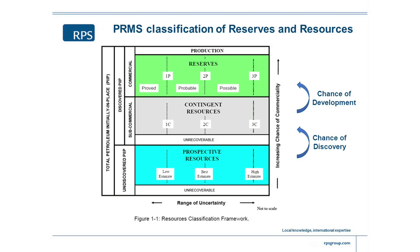At the bottom in blue, we have prospective resources — the yet-to-be-discovered volumes in our exploration portfolio; they're the future of the company. The x-axis on that diagram is deliberately there to represent the range of uncertainty. Even if we have reserves in production, we're never 100% certain how much we're going to produce until the day we effectively abandon the field. So regulations require us to always report the range of volumes.